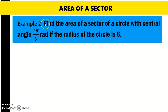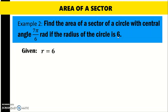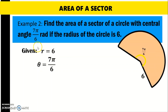Another example: find the area of a sector of a circle with central angle 7 pi over 6 radians if the radius of the circle is 6. We are given radius equals 6 and theta equals 7 pi over 6. To illustrate that, we have the sector with central angle 7 pi over 6 and radius 6.